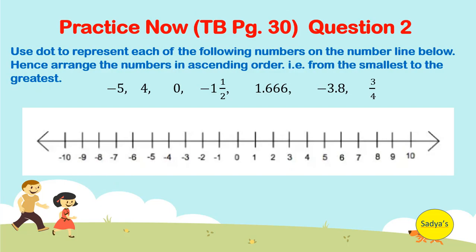In question number 2 of practice now, given on textbook page number 30, we have to use dot to represent each of the following numbers on the number line below. Hence, arrange the numbers in ascending order that is from the smallest to the greatest.